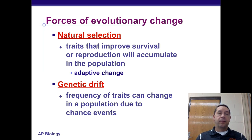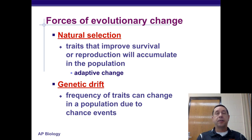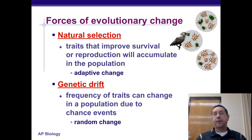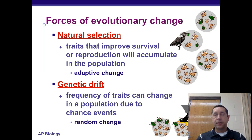Selection works on all populations, but drift primarily affects mostly small populations. This is random change — you can see a bird eating certain colors of beetles, or beetles just getting randomly stepped on.